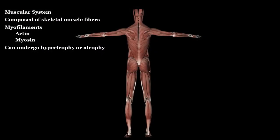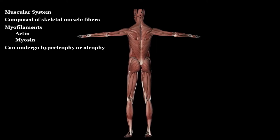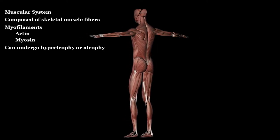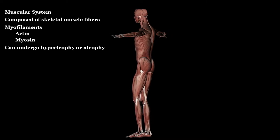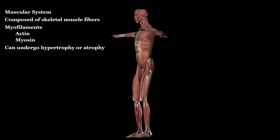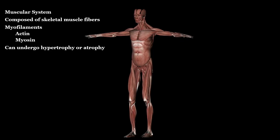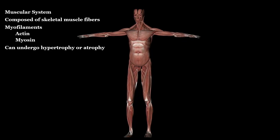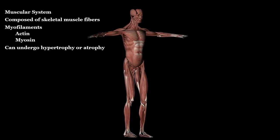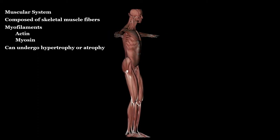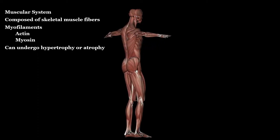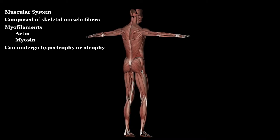The muscular system is vast, as you remember from your AP1 experience. Skeletal muscles are the most common muscles in the body, and they're the only voluntary muscles. They are striated in appearance due to the skeletal muscle fibers present. Contraction is accomplished by actin and myosin, and these muscles can undergo hypertrophy and atrophy, as we discussed in the beginning of this course.